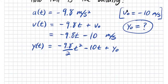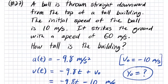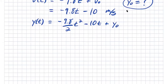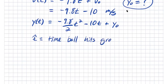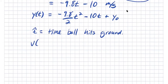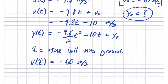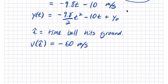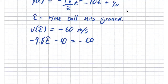When the ball hits the ground, it's going minus 60 meters per second. Let T-hat be the time the ball hits the ground, so v of T-hat equals minus 60 meters per second. Substituting: minus 9.8 T-hat minus 10 equals minus 60. I can solve this for T-hat.